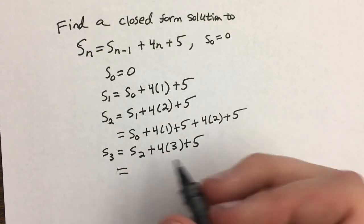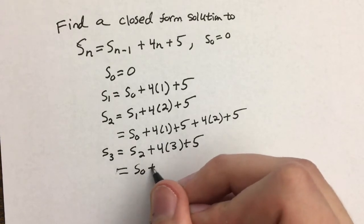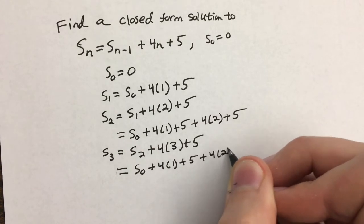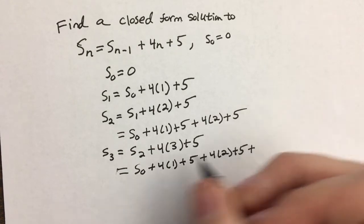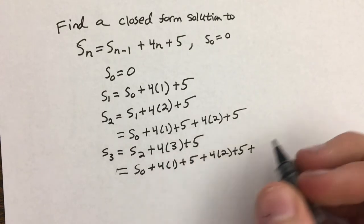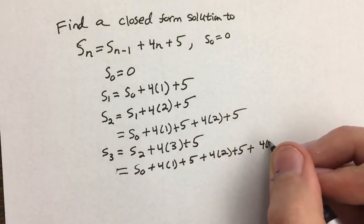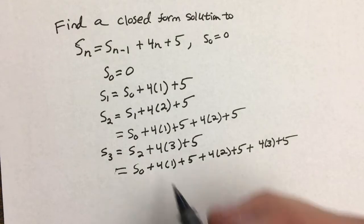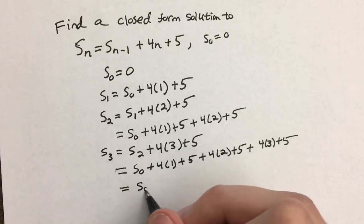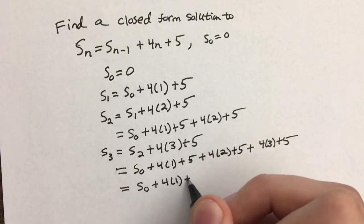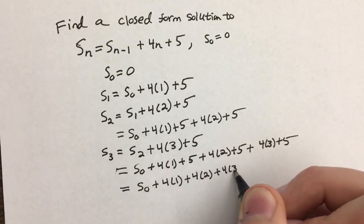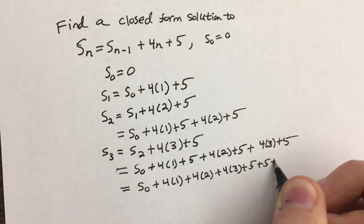Now I'm going to substitute in what we found for the second term. So we have S sub 0 plus 4 times 1 plus 5 plus 4 times 2 plus 5 plus 4 times 3 plus 5. What you should notice here is that we're starting to have some things that look kind of similar. So I'm going to regroup this a little bit. I'm going to write this as S sub 0 plus 4 times 1 plus 4 times 2 plus 4 times 3 plus 5 plus 5 plus 5.